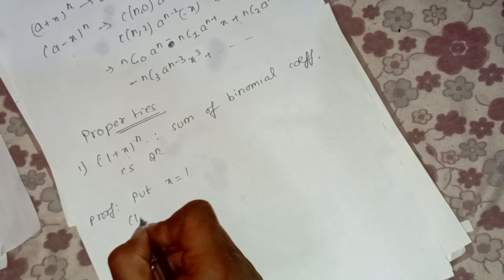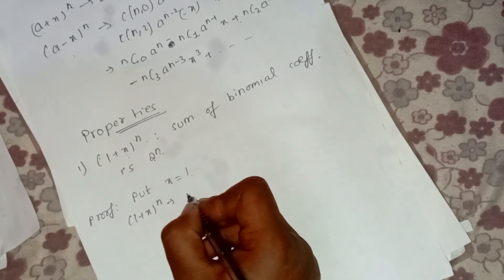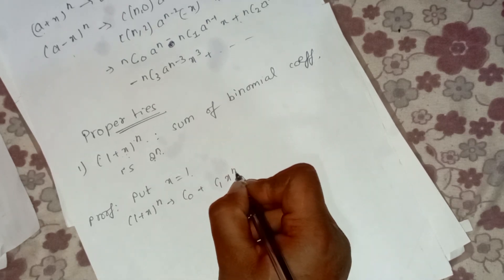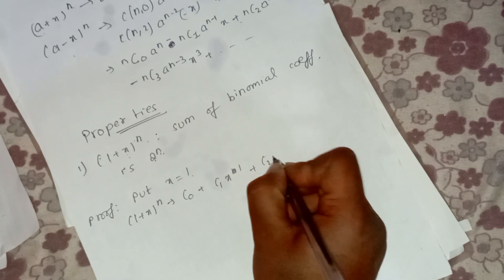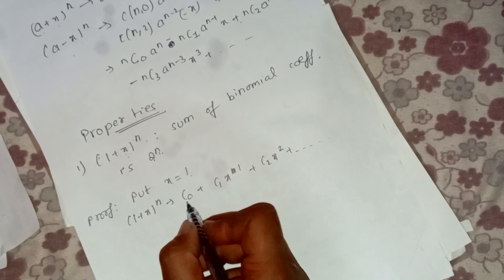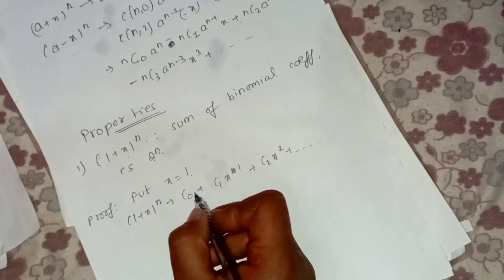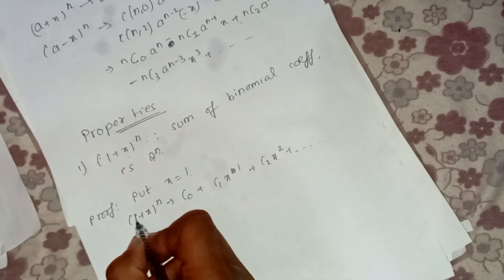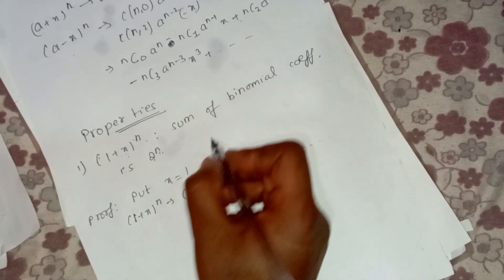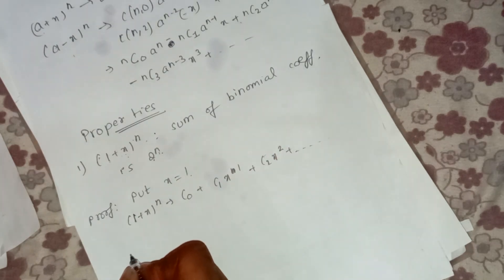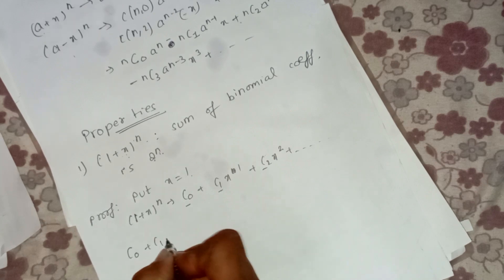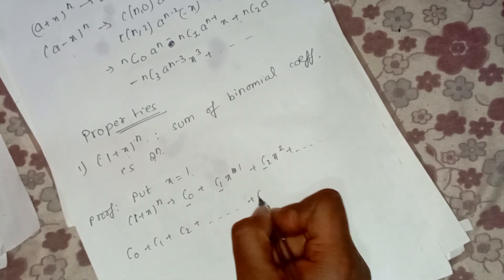When x equals 1, (1 + x)^n becomes 2^n, and the right-hand side becomes C(n,0) plus C(n,1) plus C(n,2) plus ... plus C(n,n). So the sum of the binomial coefficients equals 2^n.